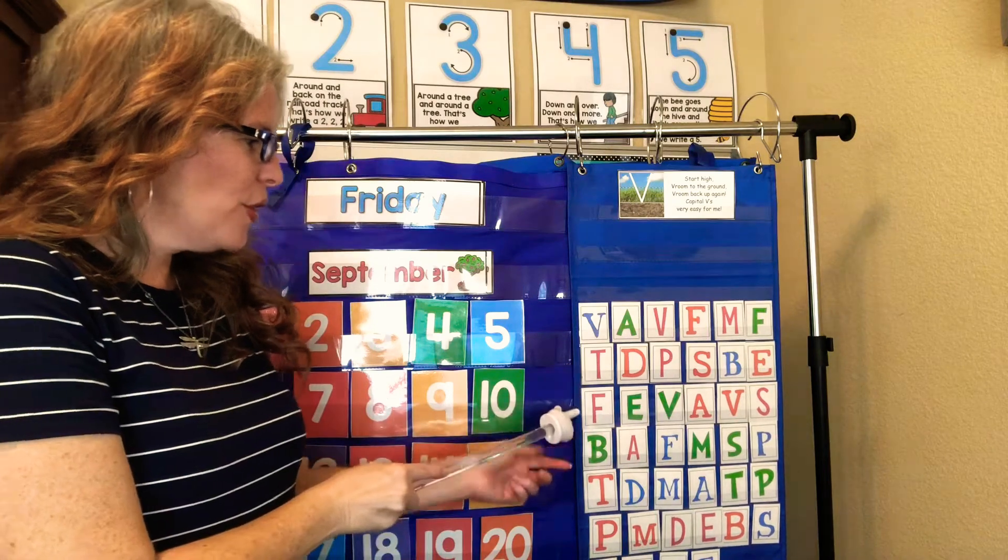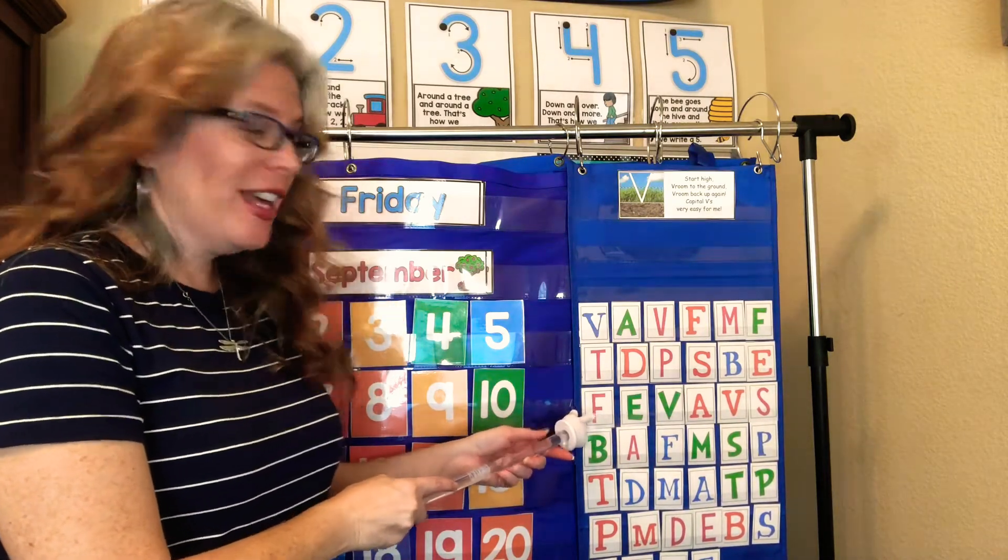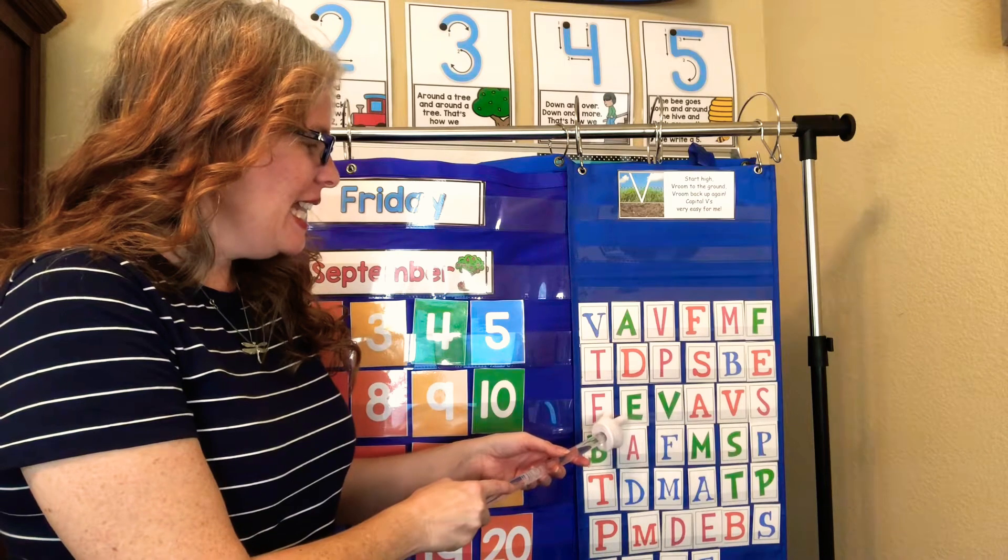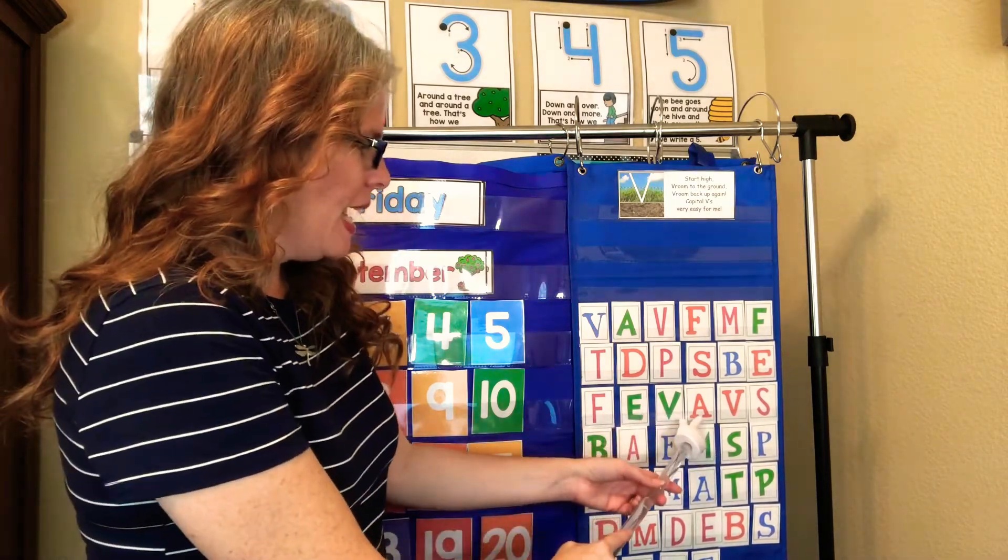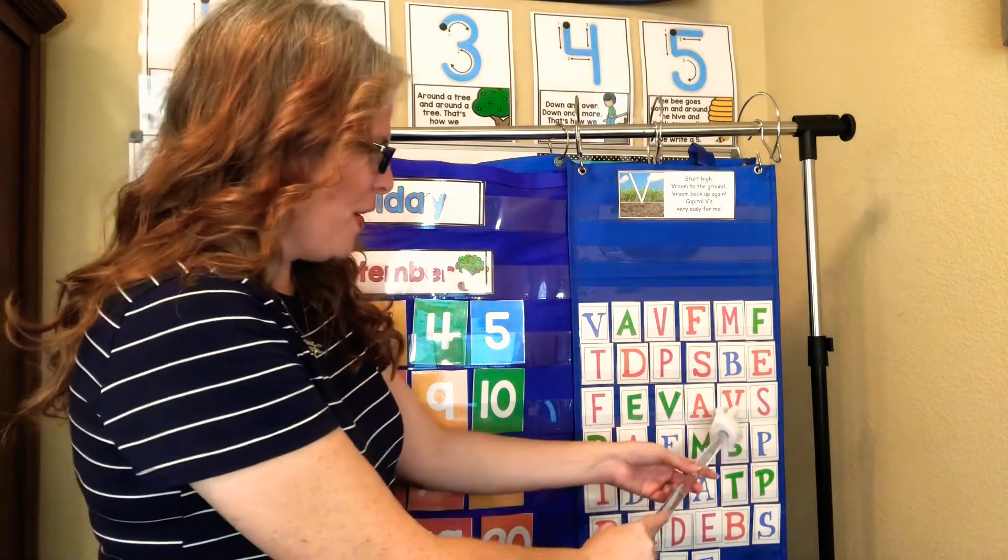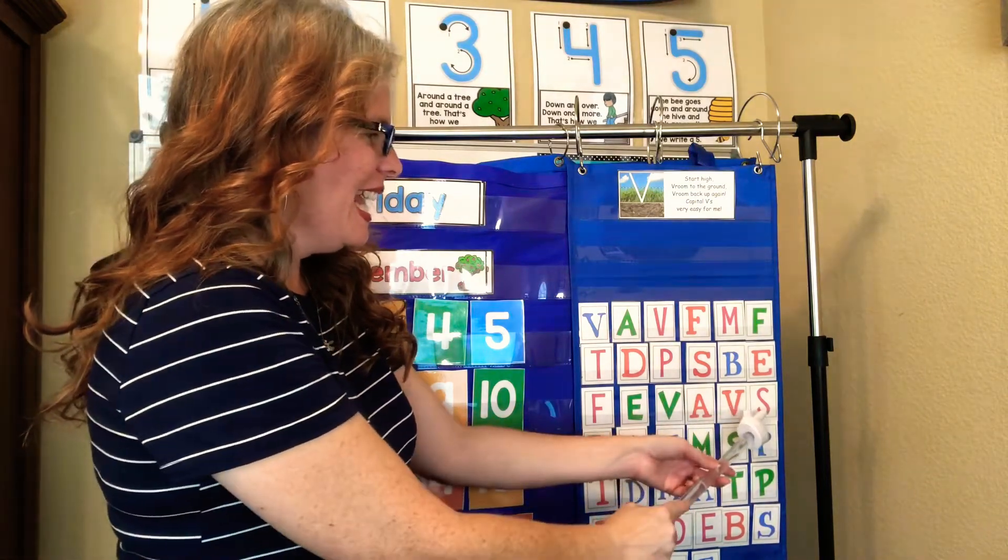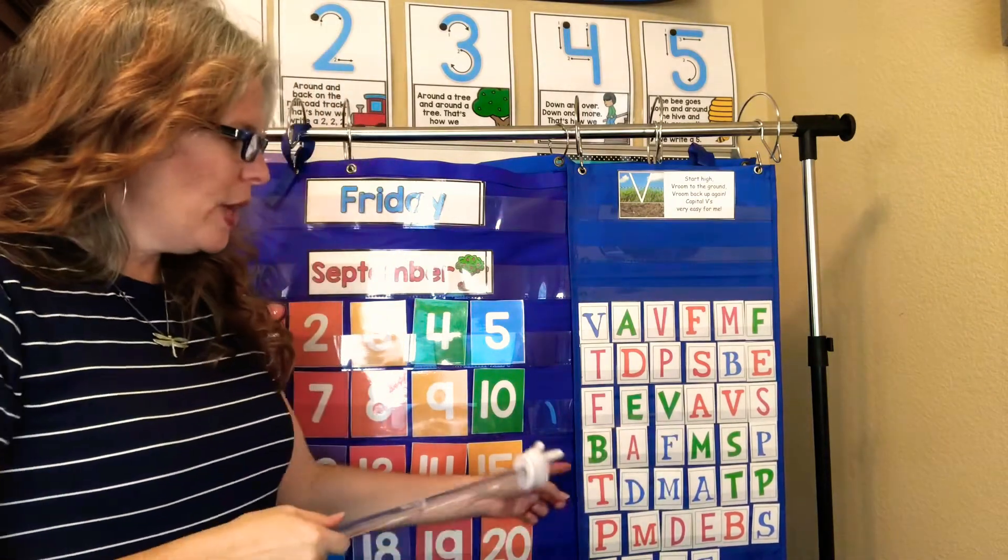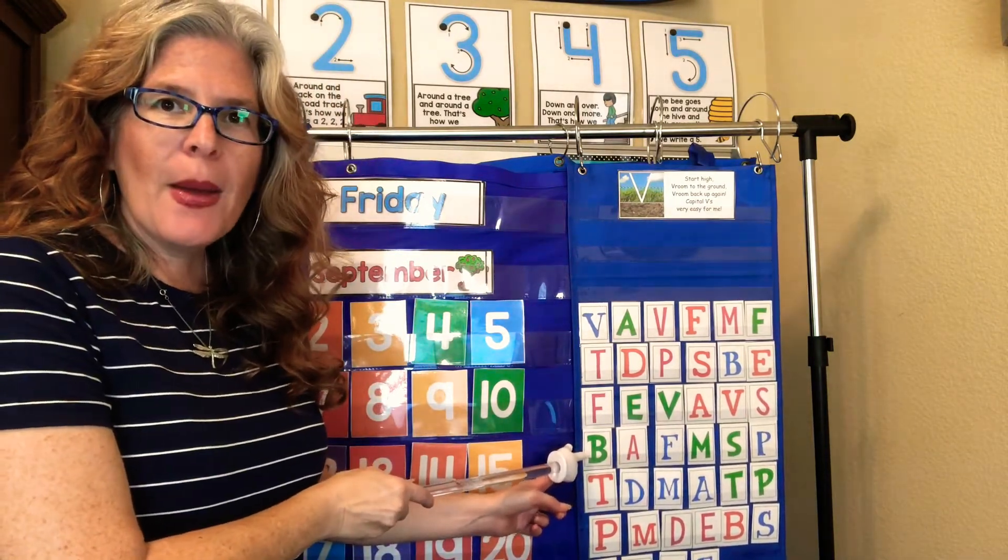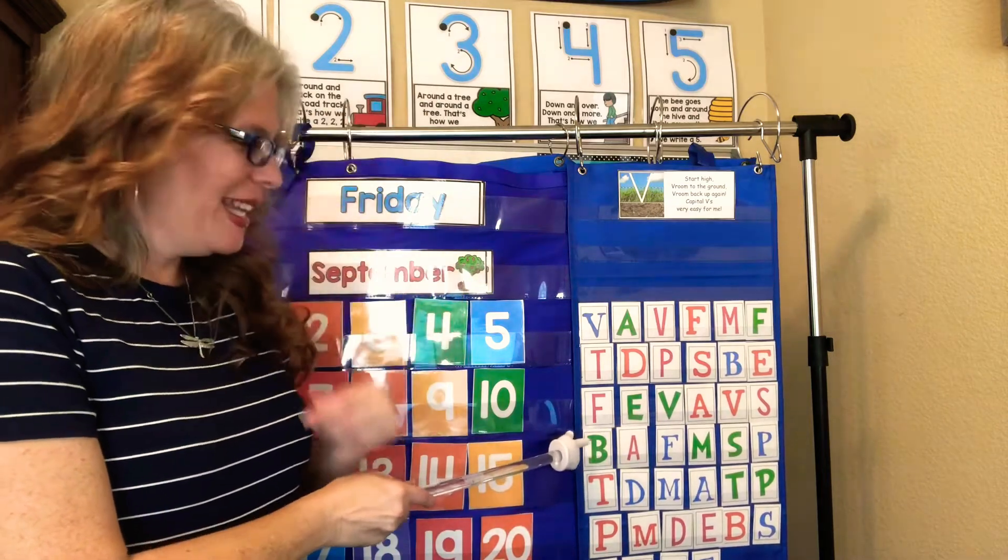Okay, let's start the third row. Ready? F. E. V. A. V. S. Sammy Snake, right? Okay, we're going to start here with Bubba Bear. What does Bubba Bear say? B. B. Yes.